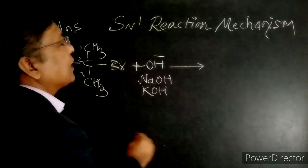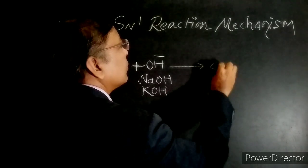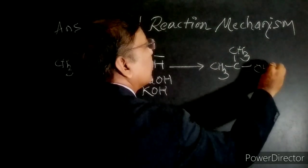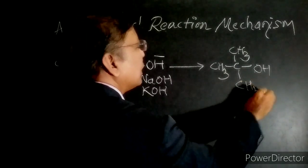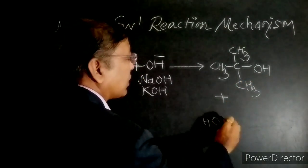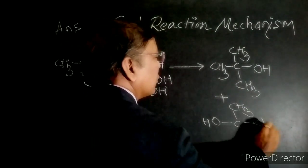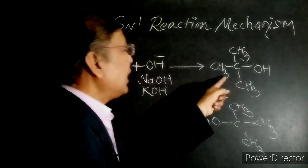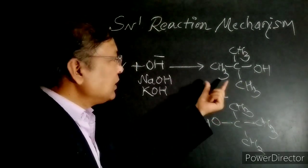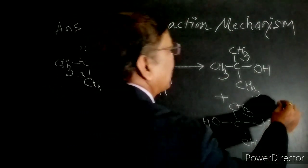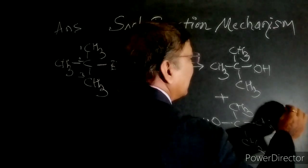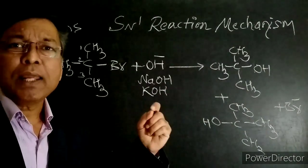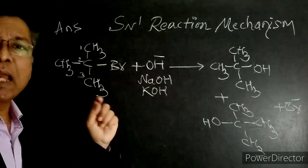This nucleophile replaces the bromine atom and we get two types of products: tertiary butyl alcohol as a retention product, and tertiary butyl alcohol as an inversion product. The bromine atom is replaced in the form of bromide ion. I will discuss retention and inversion later.